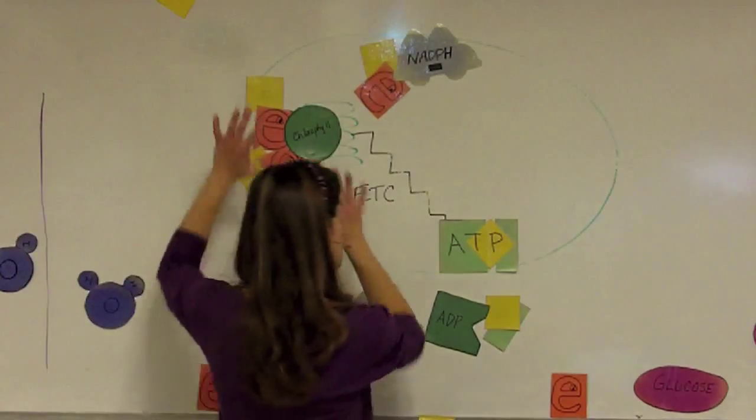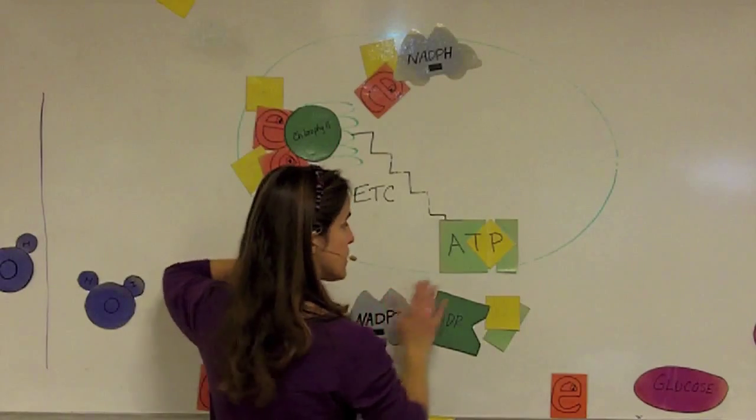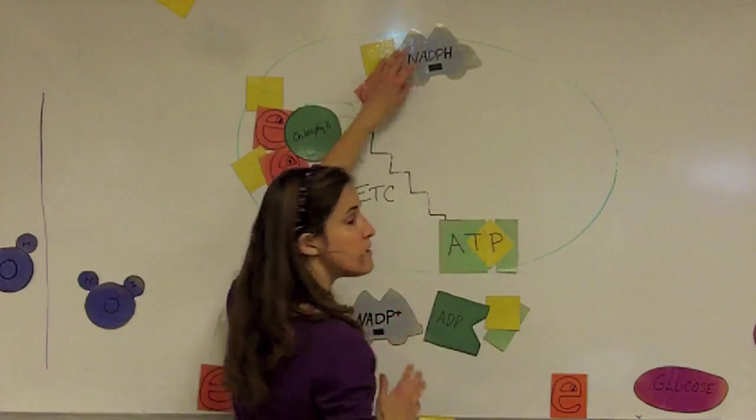So now we have energy that was originally from the sunlight, captured in two energy carriers, ATP and NADPH.